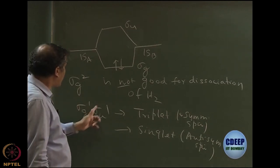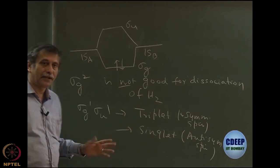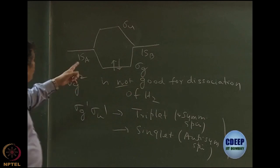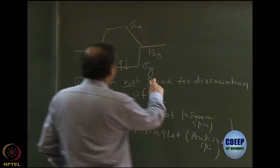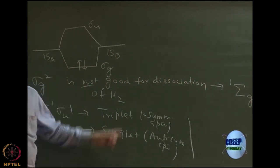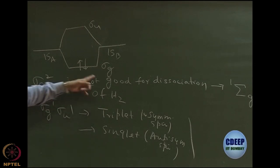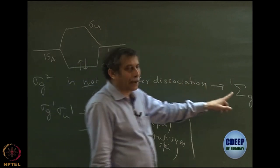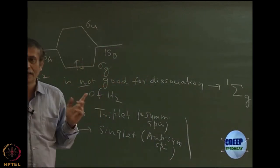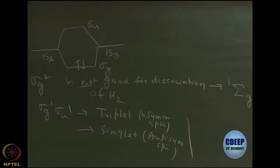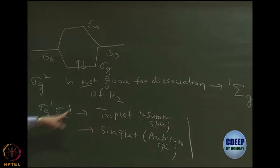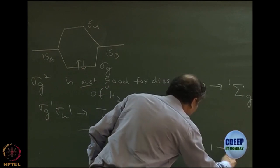We are interested in a singlet sigma_G state. The sigma_G squared configuration gives singlet capital sigma_G, because sigma times sigma gives capital sigma, G times G gives gerade, and it's a singlet. Molecular term symbols are written as 2S+1 on the superscript, then the total L value. For molecules, L=0 is called capital sigma, just as L=0 is S for atoms. If one electron is in sigma_G and one in sigma_U, the product gives a singlet sigma_U state, which is not the symmetry we want.